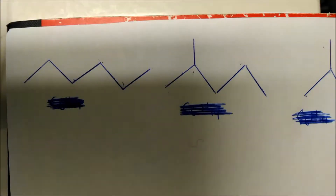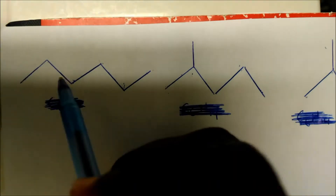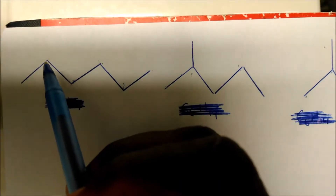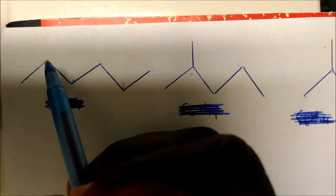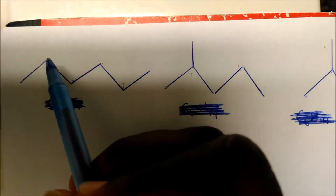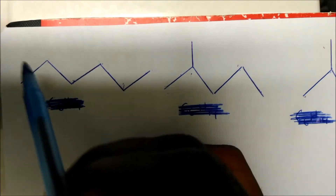This idea of bond line structure is what we're about. Let's see if we can come up with some molecular formulas for these and go over the rules. In a bond line structure, at every endpoint and intersection, there is a carbon. With that being said, let's count how many carbons we have on this chain.